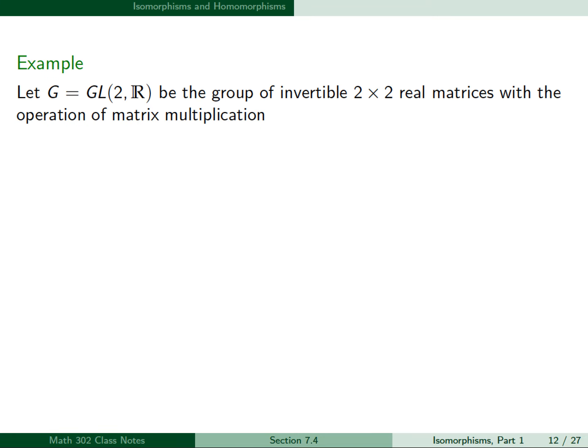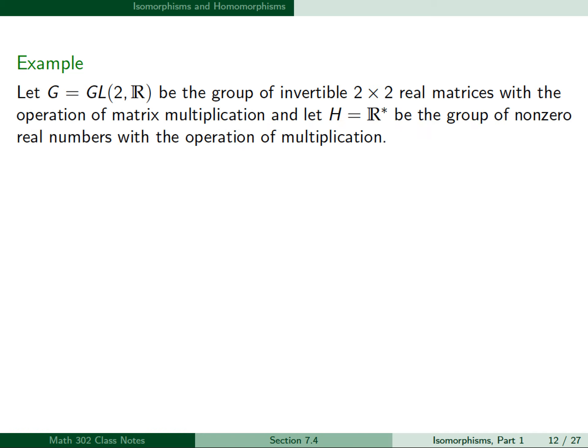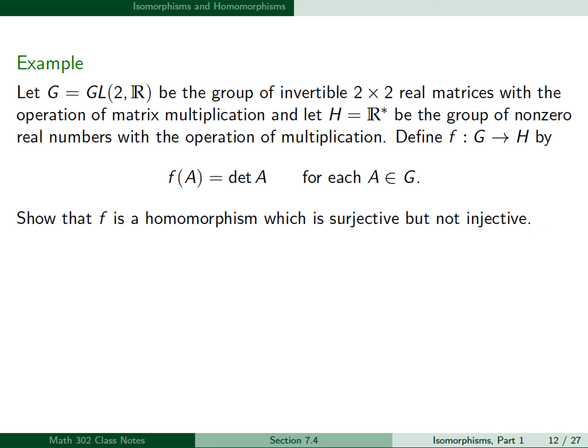For our next example, let G = GL2(ℝ) be the group of invertible 2×2 real matrices with the operation of matrix multiplication, and let H = ℝ* be the group of non-zero real numbers with the operation of real number multiplication. We define f from G to H by f(A) = det(A) for each matrix A in G, and we want to show that f is a homomorphism which is surjective but not injective.